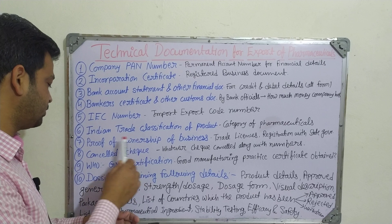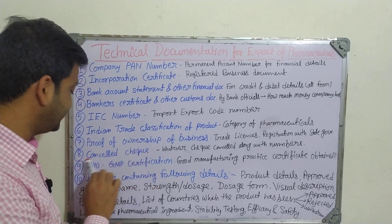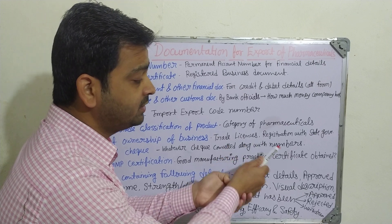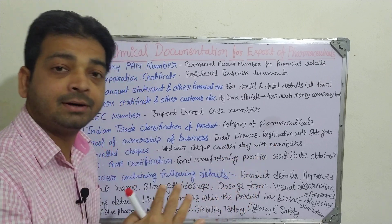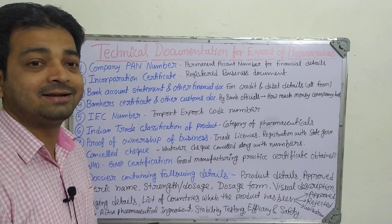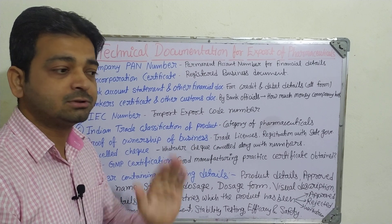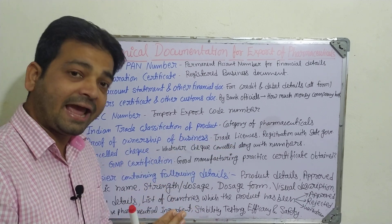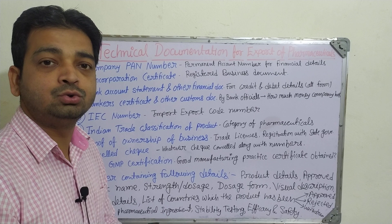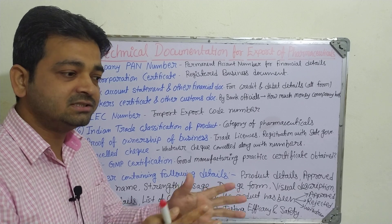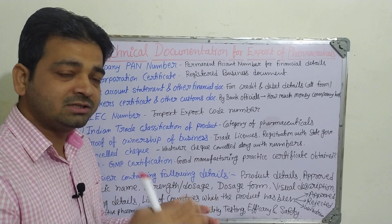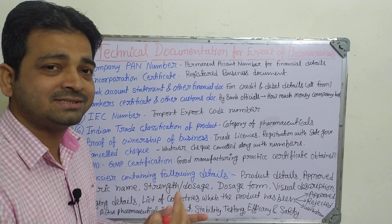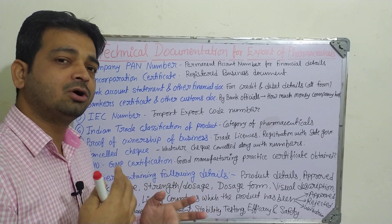The eighth one is the cancelled check. Whatever checks have been cancelled, along with the check number, must be revealed — showing how many checks were written and issued during a period of six months or one year, but cancelled due to various reasons. The exporting authority wants to know the frequency of cancellations and the basic reasons.